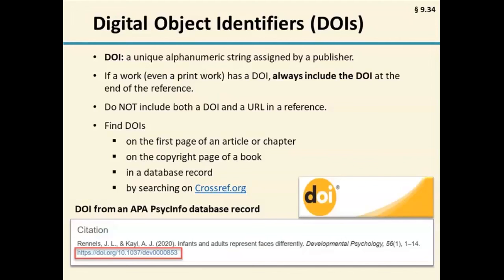This applies to all works that have a DOI, both online and in print — so if you see a DOI, always include it. If you include a DOI, do not also include a URL; a reference entry will not include both. The DOI takes precedence. Most journal articles will have a DOI, as will some other types of works like books or book chapters. If you're not sure whether the work has a DOI, or you need to add it later, you can search for the DOI on CrossRef.org, which offers a DOI search function where you can cut and paste your reference into a search box.